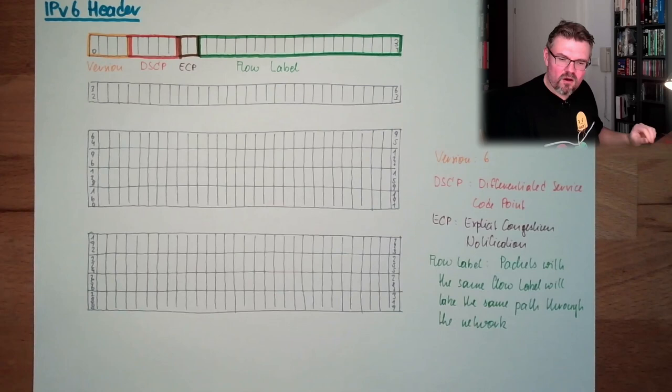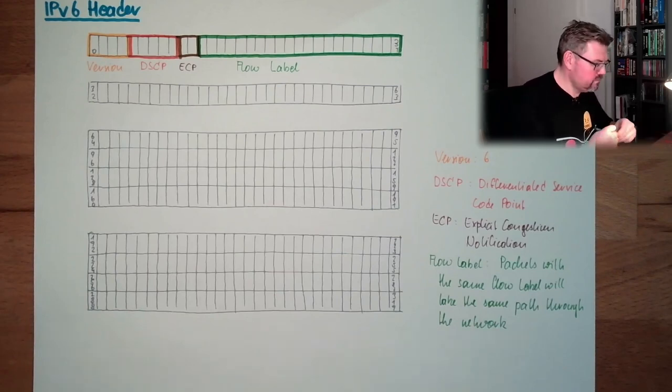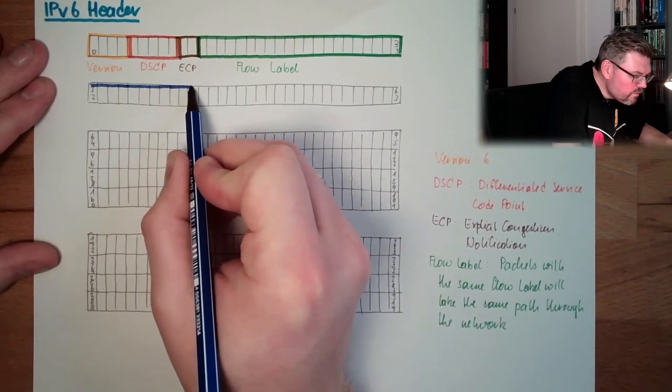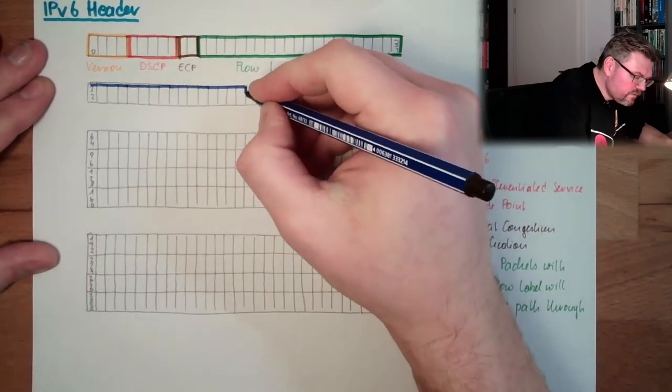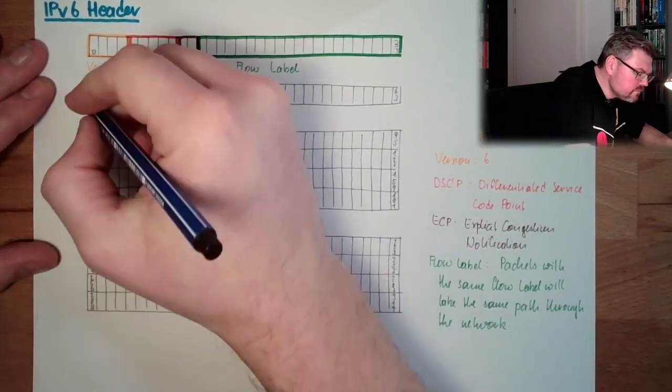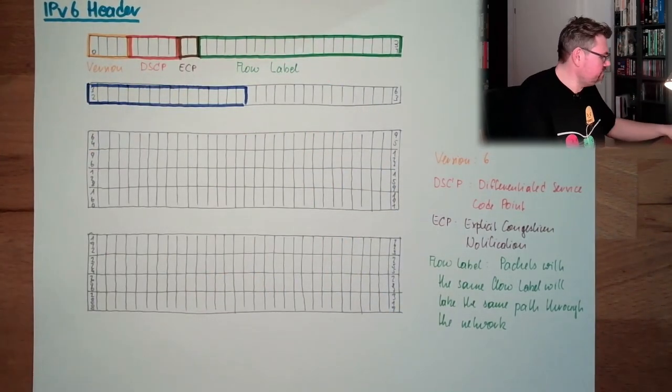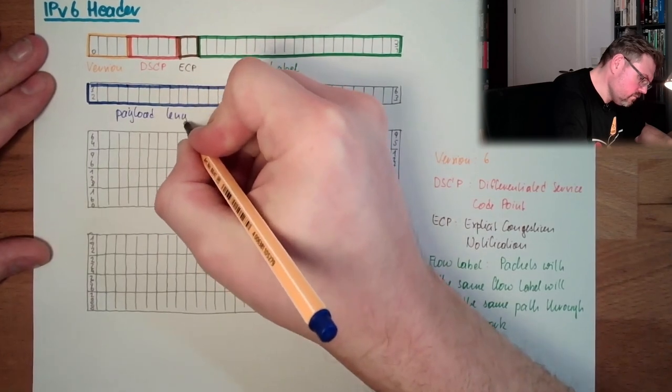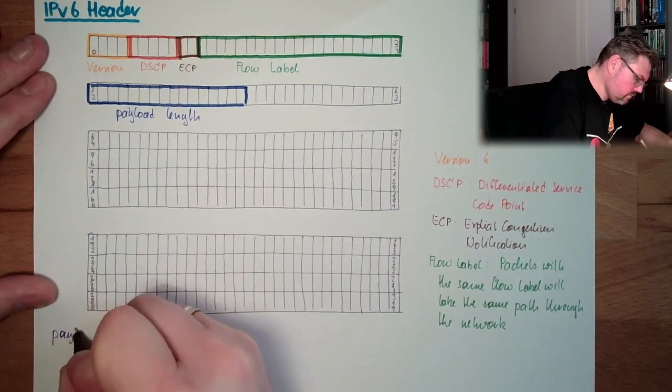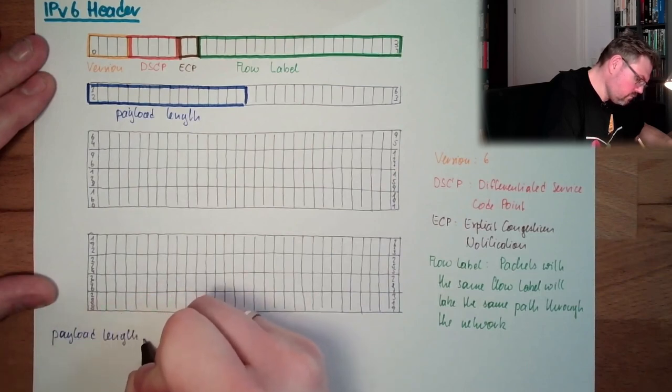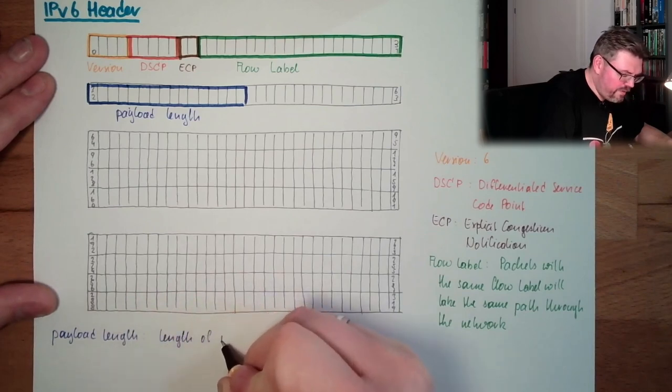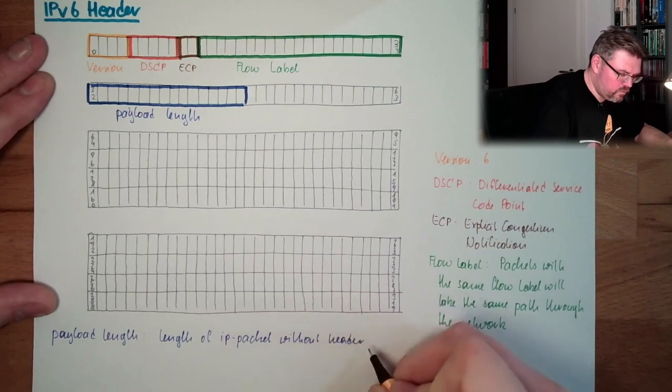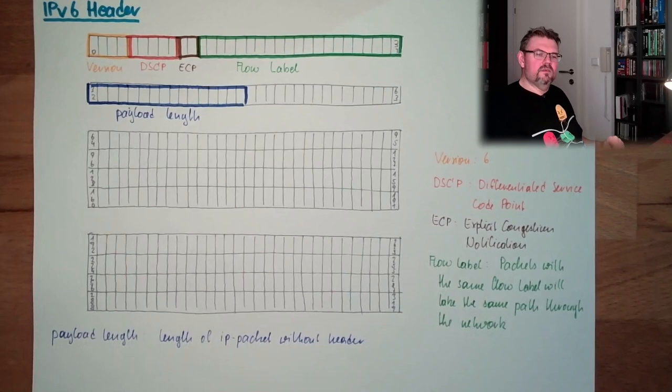And then we have 16 bits of payload length. That's the payload length. The length of the IP packet without header. So the header length is not included, the header length is always this, it's always looking the same.